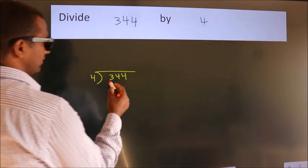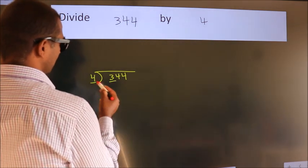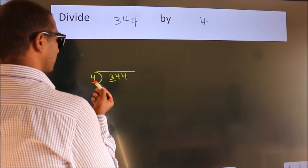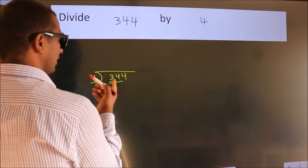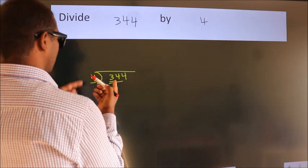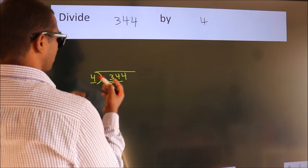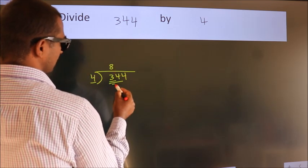Next, here we have 3, here 4. 3 is smaller than 4, so we should take two numbers: 34. A number close to 34 in the 4 table is 4 times 8 equals 32.